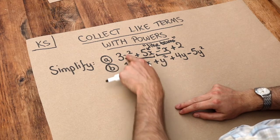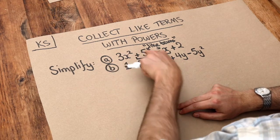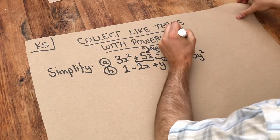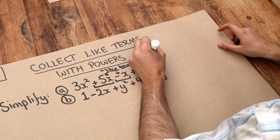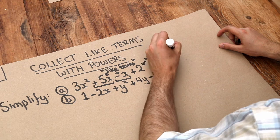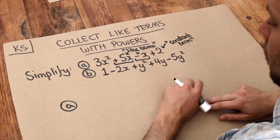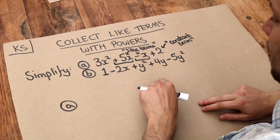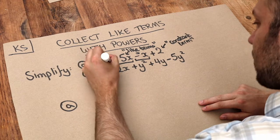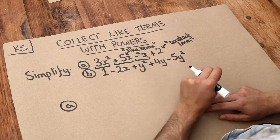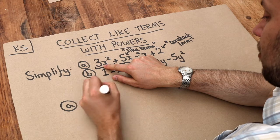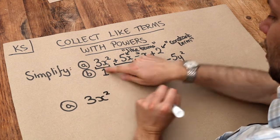So we've got an x squared term, we've got two x terms, and we've got what's known as a constant term because it doesn't have any variables at all. When we simplify this, let's look at each type of term. Let's look at this 3x squared term. Well, there's no other x squared terms, so that's just going to stay by itself, minding its own business.